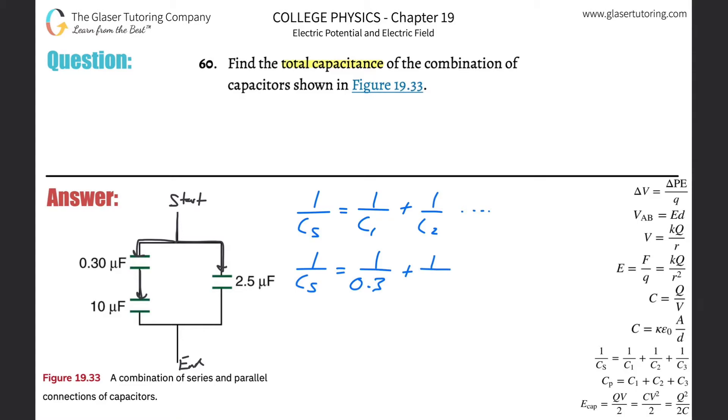This is then one divided by 10. Now simply take out that calculator and plug that in. So one over 0.3 plus one over 10, and we get about three point four three, and this is in terms of microfarads.